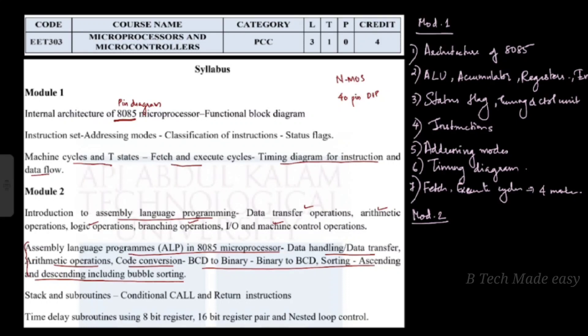The topics include data transfer, assembly language programs, arithmetic operations, and code conversion — BCD to binary and binary to BCD code conversion. Also covered are sorting in ascending order, descending order, and bubble sorting.